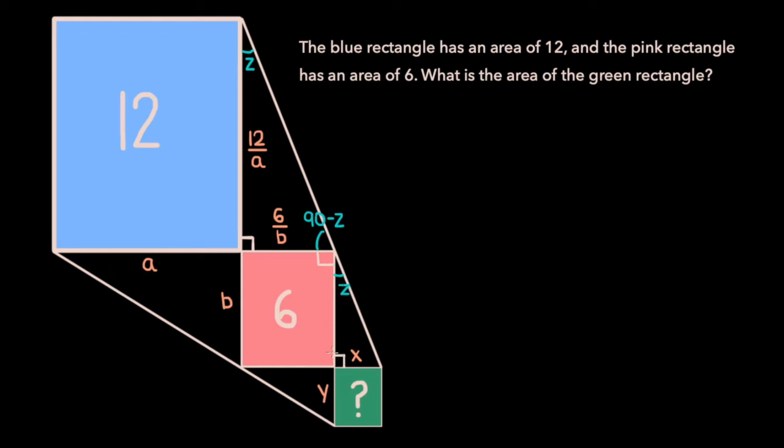If this angle is z, and this angle is 90 degrees, then this third angle must once again be 90-z. And so, as you can see, these two triangles are similar, because they have the same set of three angles.